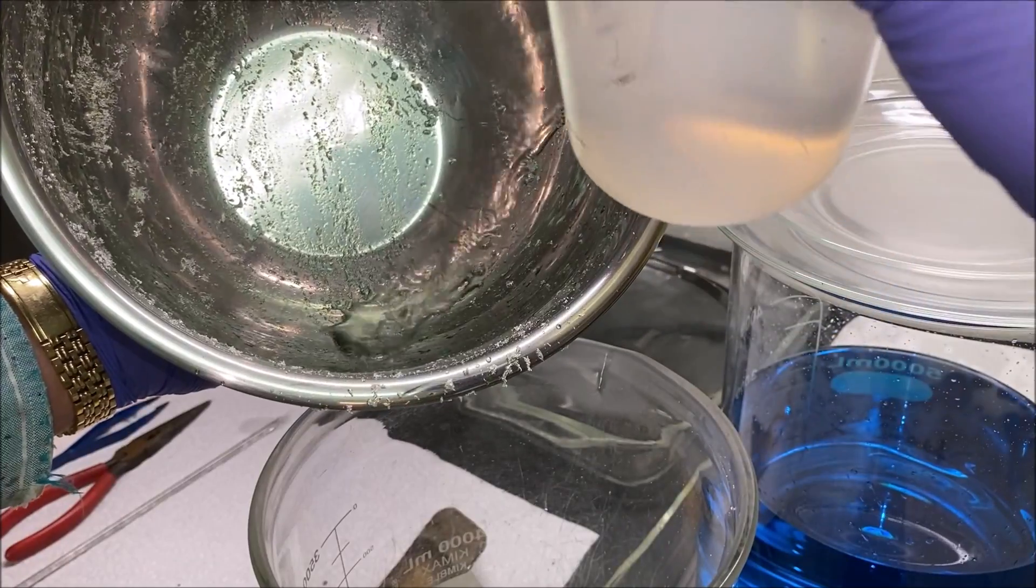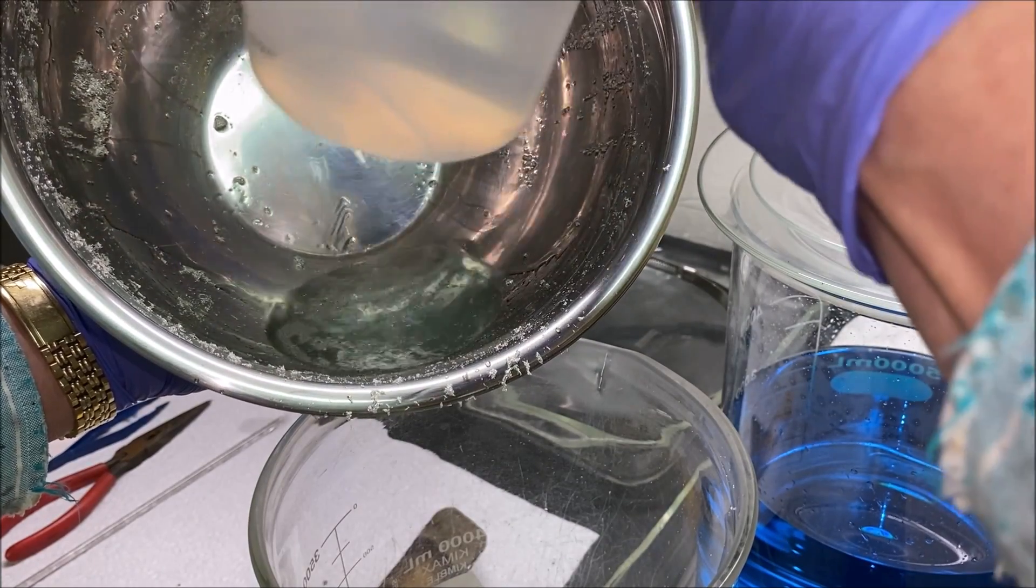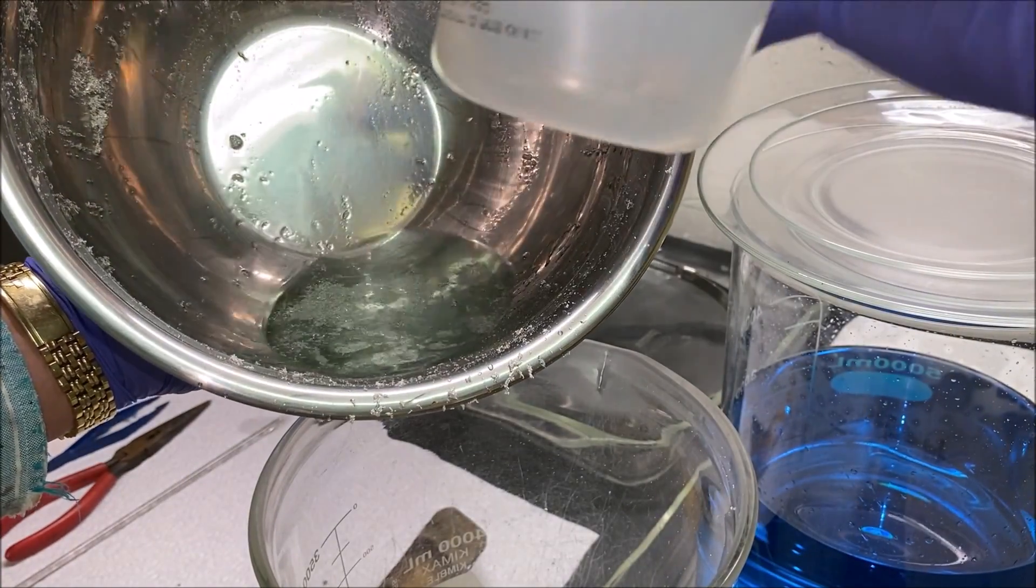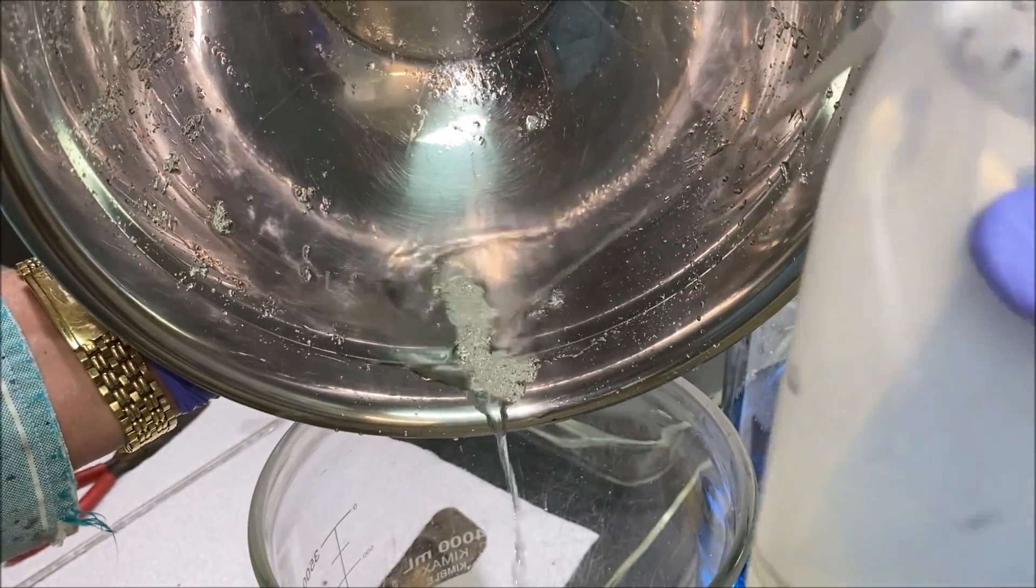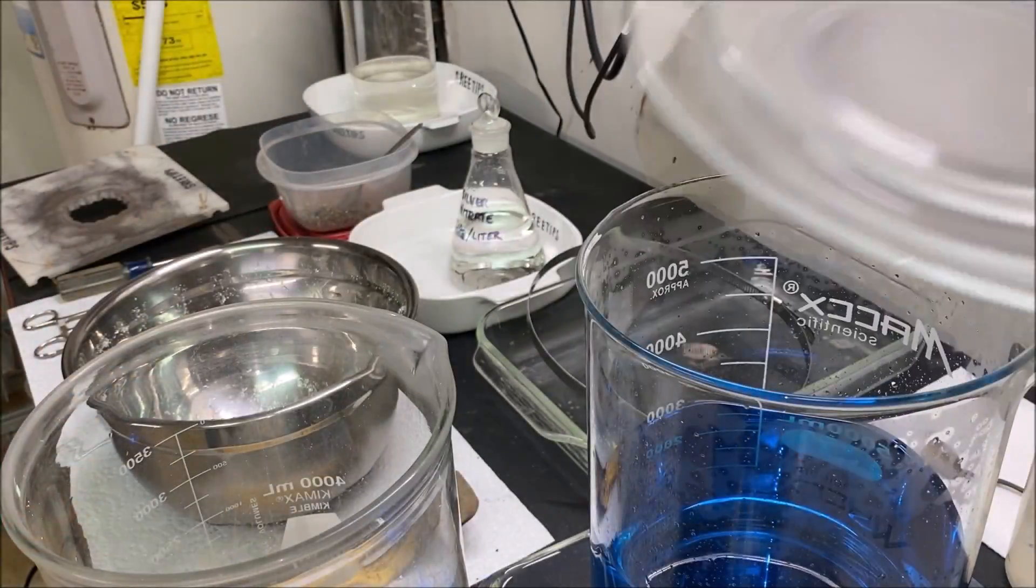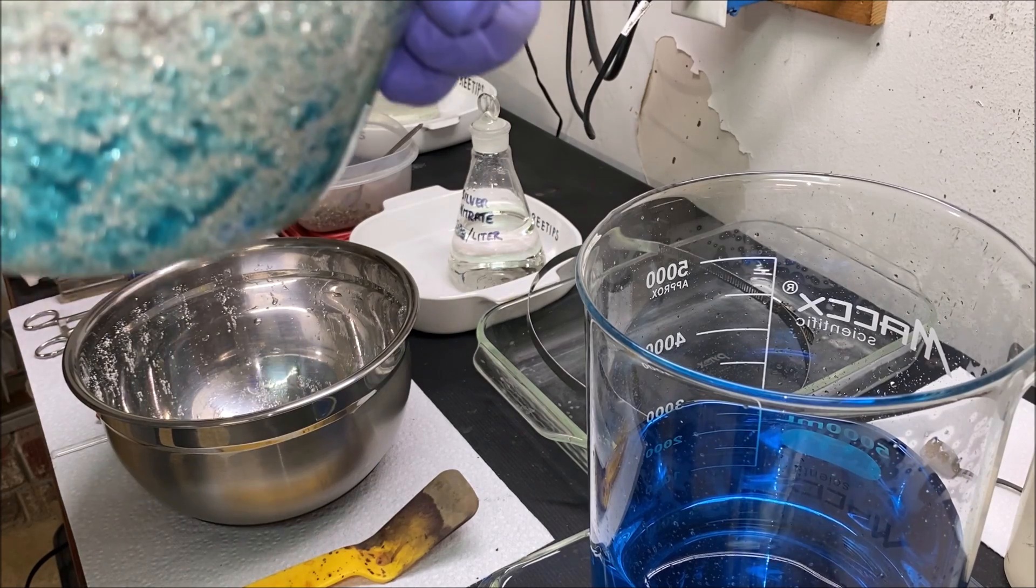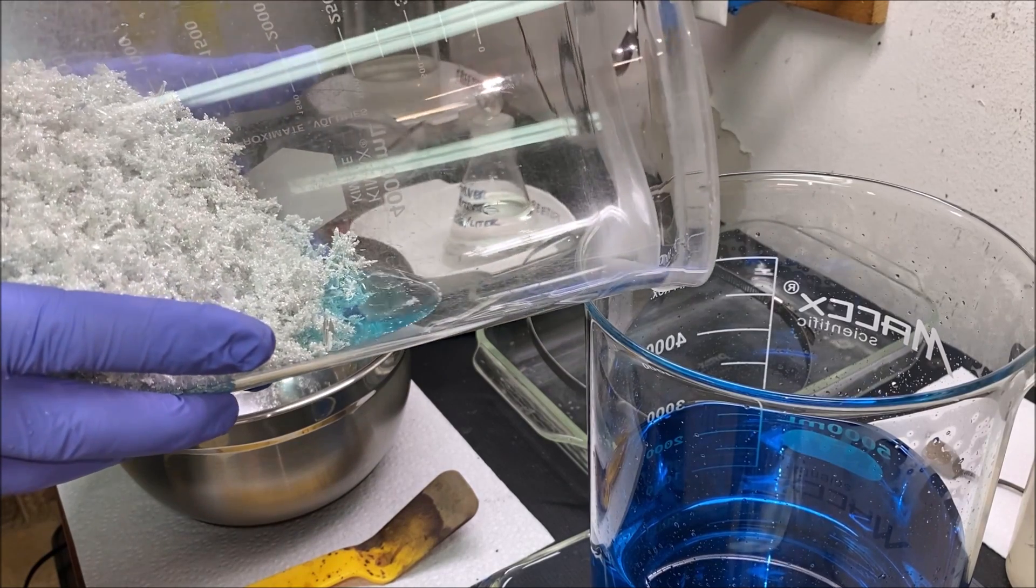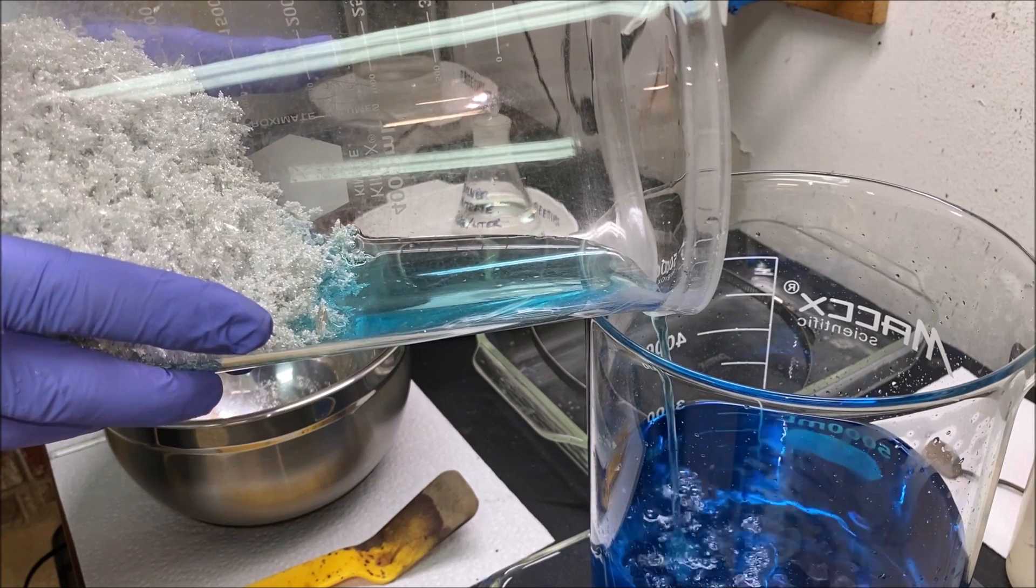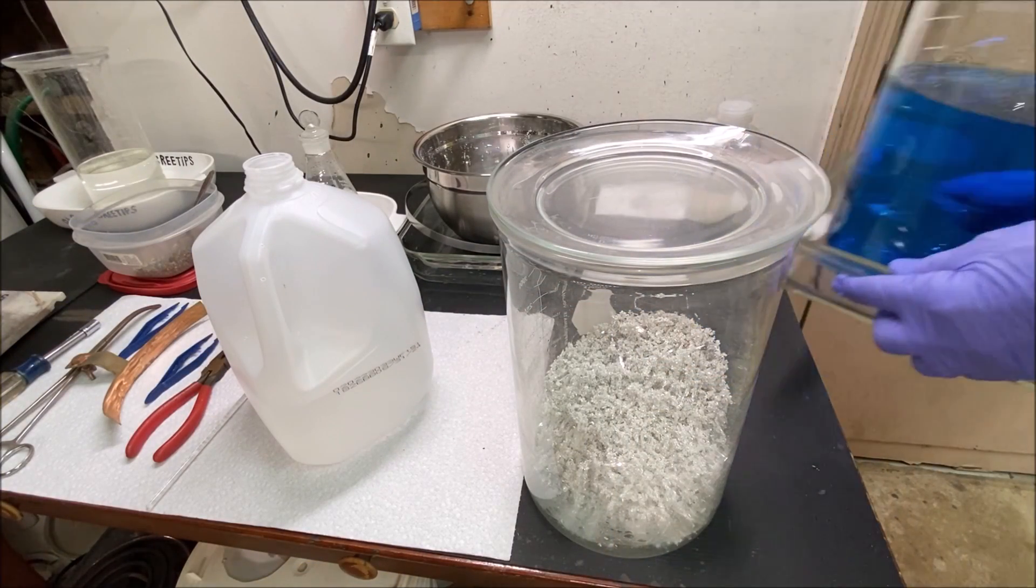Now we'll rinse the inside of the silver cell out with some distilled water and add that to the crystals. A little bit of silver rinsed down into the beaker. Now we'll pour off the electrolyte out of here. There's still concentrated silver nitrate electrolyte down in the bottom. Add it to this batch here because we're going to reuse the electrolyte a second time.